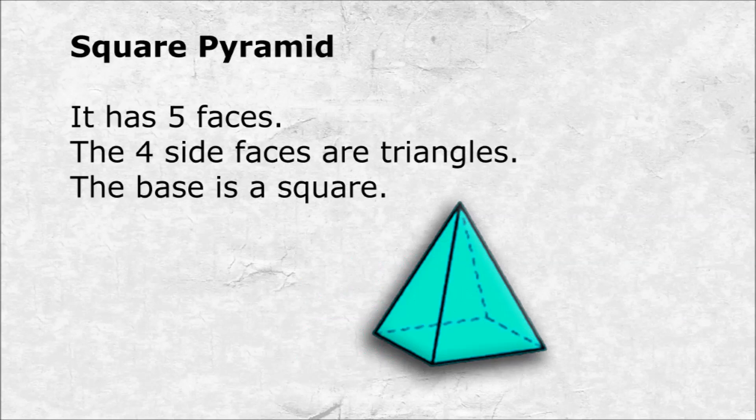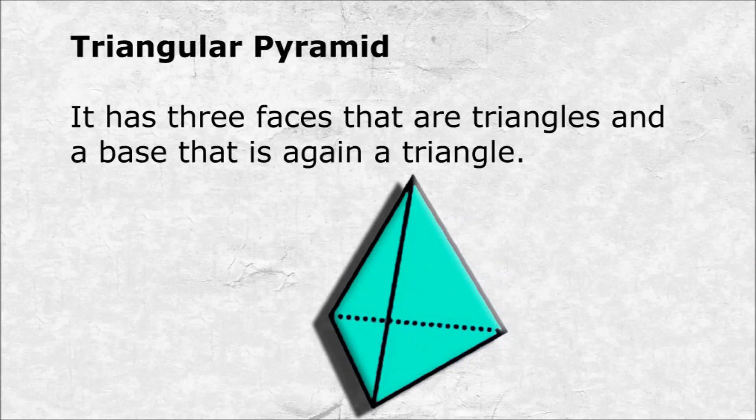Square pyramid. It has five faces. The four side faces are triangles and the base is a square. Triangular pyramid. It has three faces that are triangles and a base that is also a triangle.